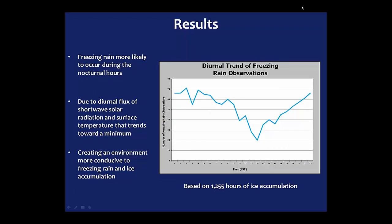Another thing that came out of the data was looking at the time of day. In local standard time, during the nocturnal hours, freezing rain occurs more frequently, while during the morning into the early afternoon peak heating hours, there's a minimum in freezing rain occurring on the sensors. This is probably due to the diurnal flux of shortwave solar radiation and surface temperature trending toward a minimum during the nocturnal period, creating an environment more conducive to freezing rain and ice accumulation.